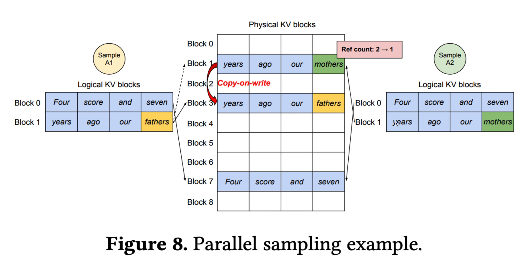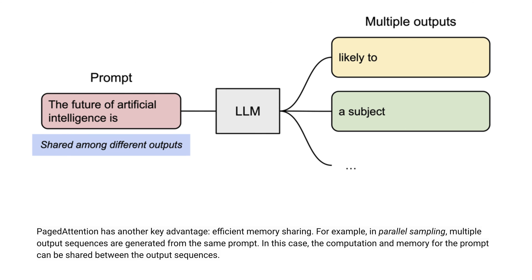At the generation phase, the two outputs sample different tokens and we need separate storage for the KV cache. vLLM has this concept of copy-on-write mechanism. Whenever sample one needs to write to its last logical block one, vLLM recognizes the reference count is two, which is greater than one. It allocates a new physical block - physical block three - and instructs the block engine to copy the information from block one to block three, and decreases the reference count from two to one. Next time when sample A2 writes to physical block one, the reference count is already reduced to one, so A2 directly writes its newly generated cache to physical block one.